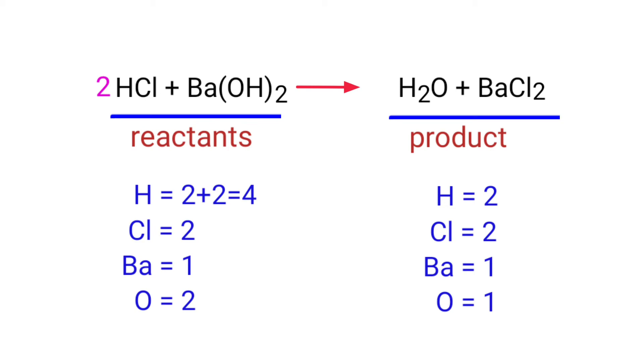Now we need to balance the hydrogen and oxygen atoms. To do this, we need to put a coefficient of 2 in front of H2O. The equation is now balanced.